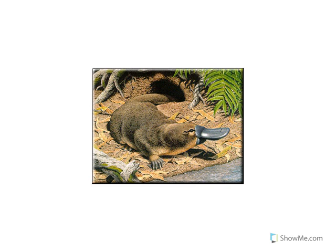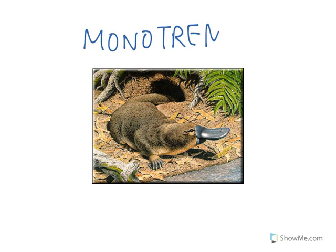First off, let's talk about monotremes. This is a monotreme — specifically this is a platypus. The reason that a platypus is a monotreme is because it lays eggs. It's very uncommon among mammals.